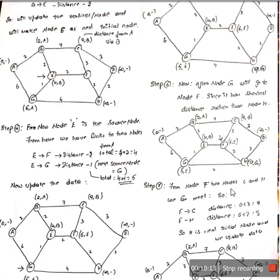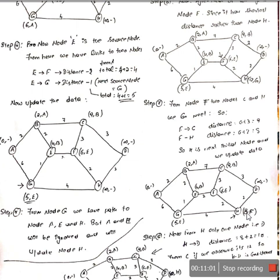From node F, there are two paths: to H and to C. For C: 6 + 3 = 9, which equals C's current value of (9, B), so since both distances are equal we keep the existing value. For H: 6 + 2 = 8, which is less than H's current value of 9, so we update H to (8, F). Node F is now completed.